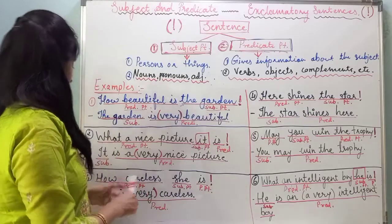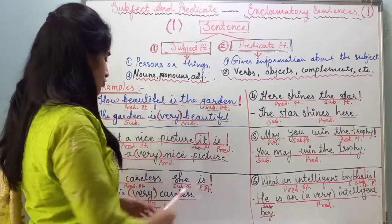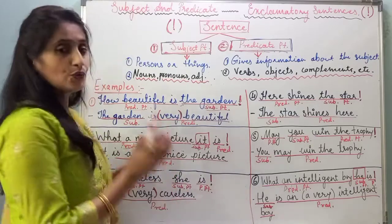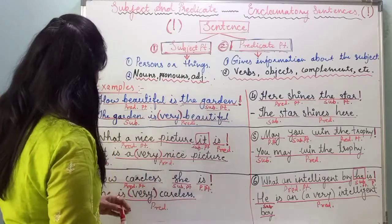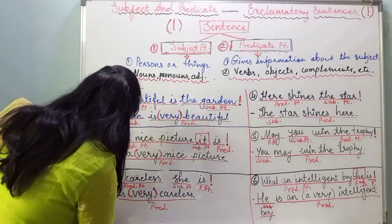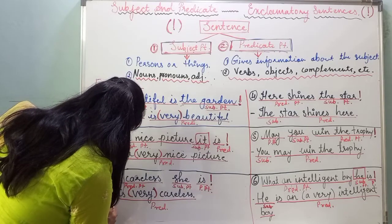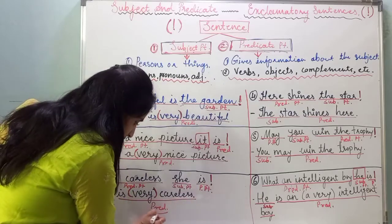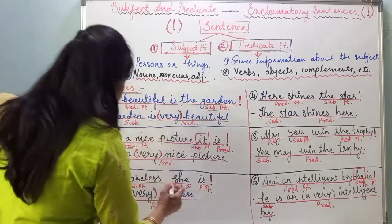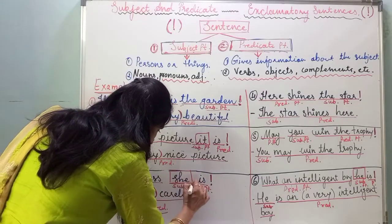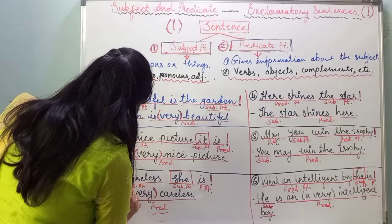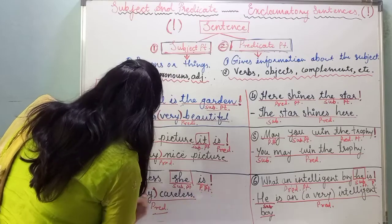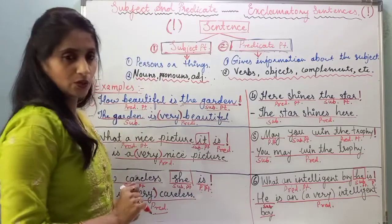See the third sentence: 'How careless she is!' The conversion of the sentence is 'She is careless,' or 'She is very careless.' The subject in this sentence is 'she.' The remaining part 'is careless' is the predicate part. So 'she' is the subject part, and 'how careless' and 'is' together form the predicate part.